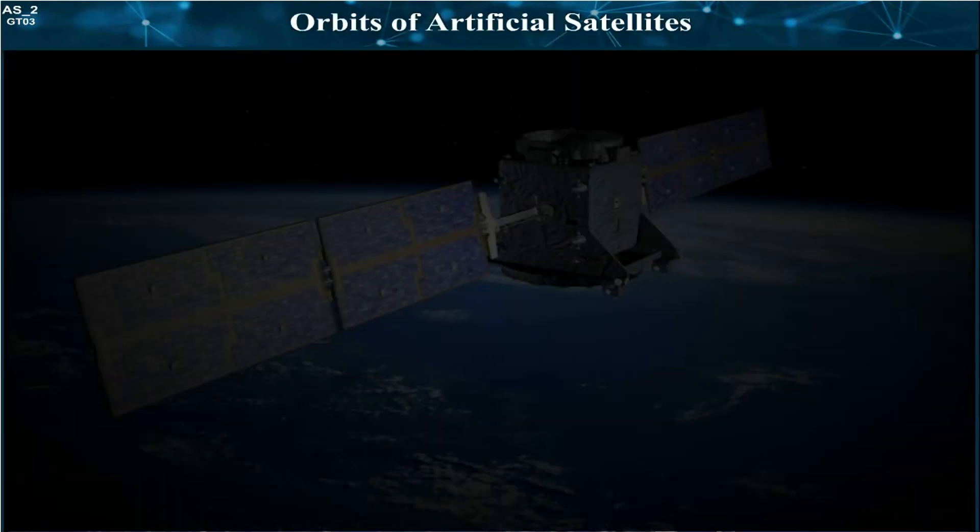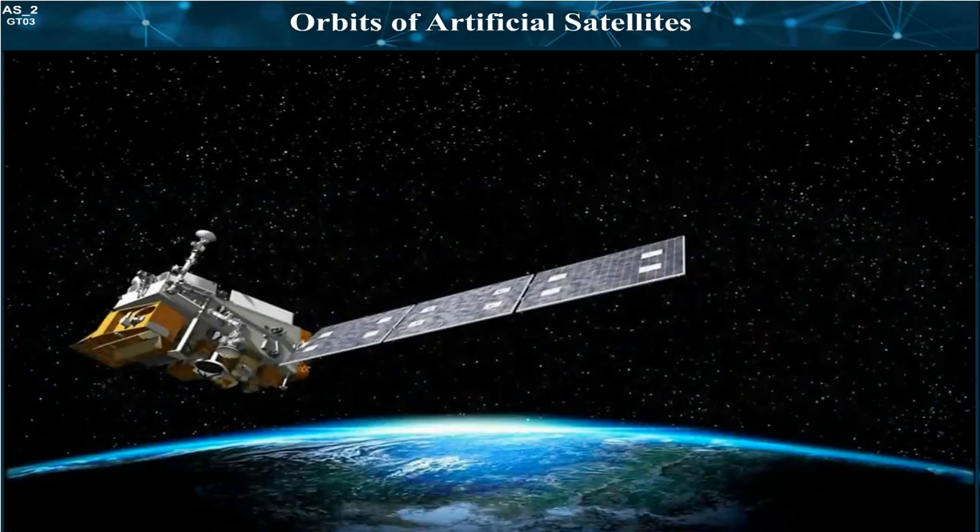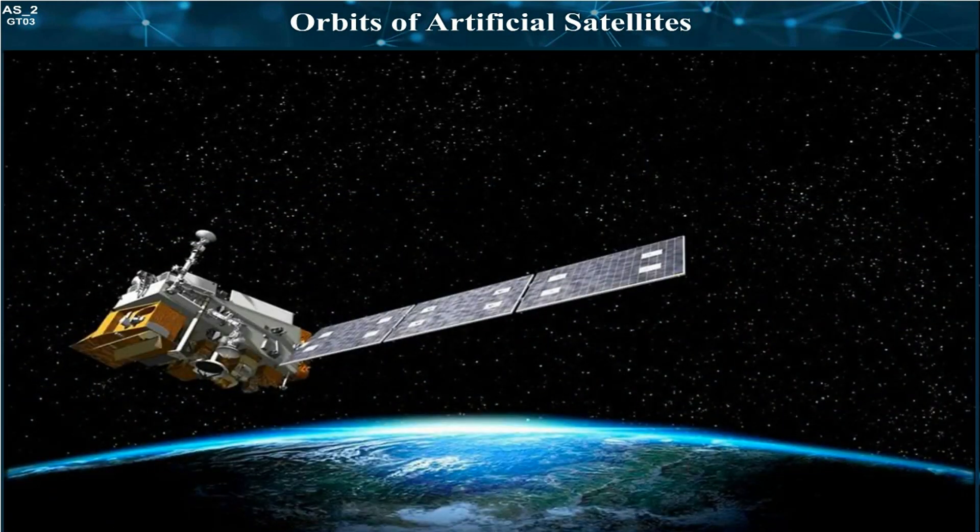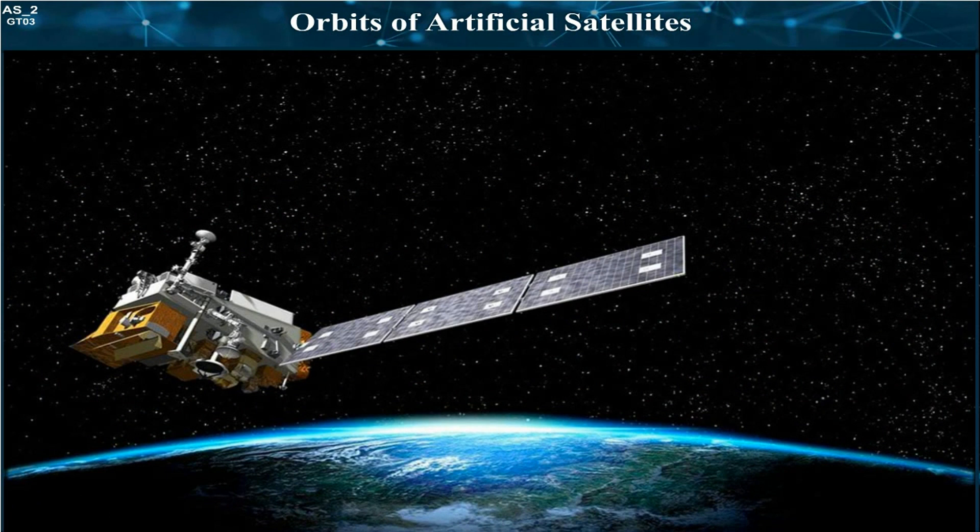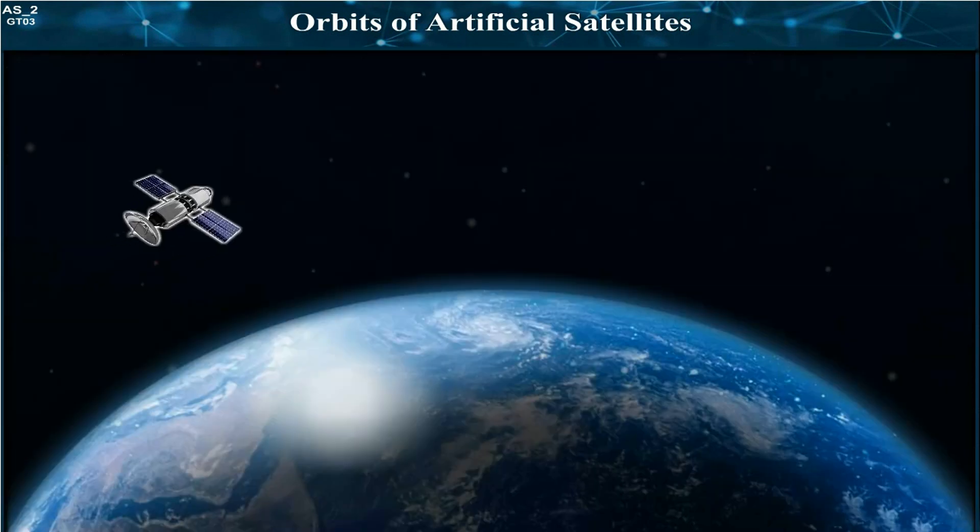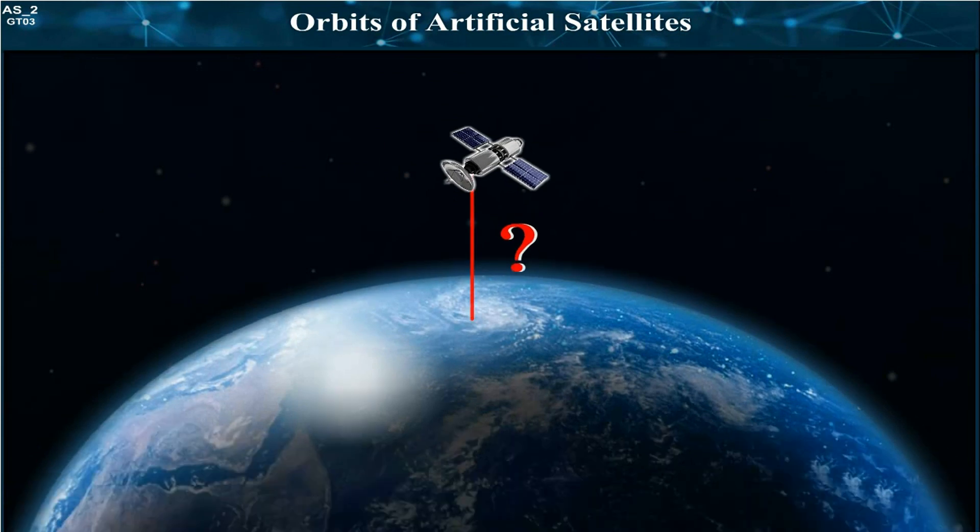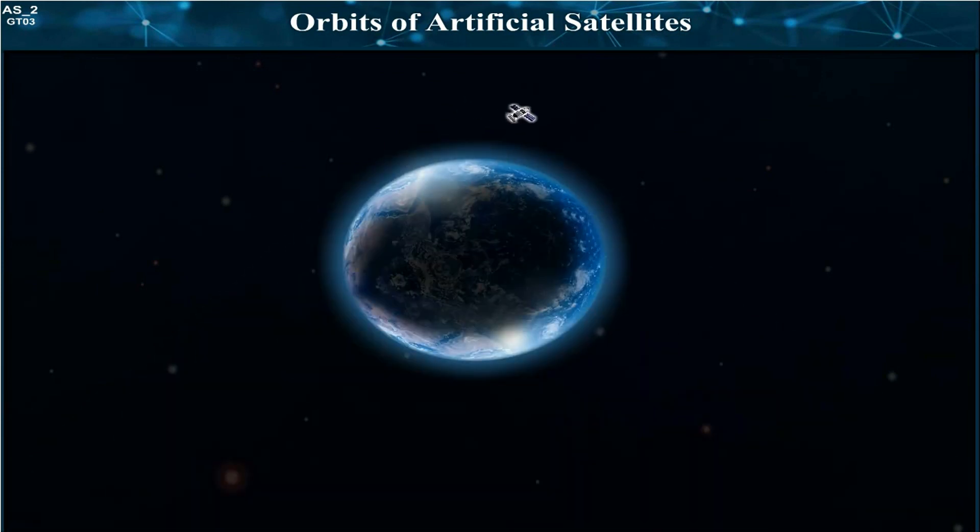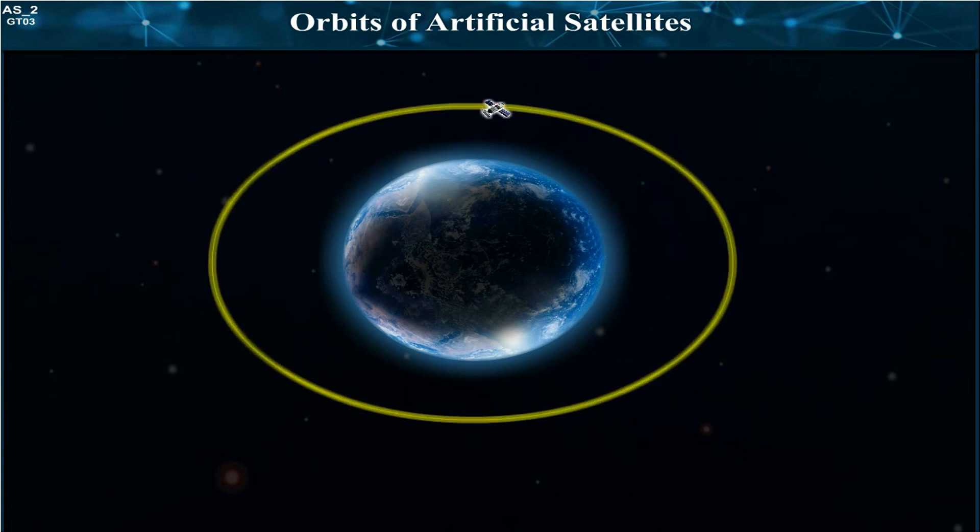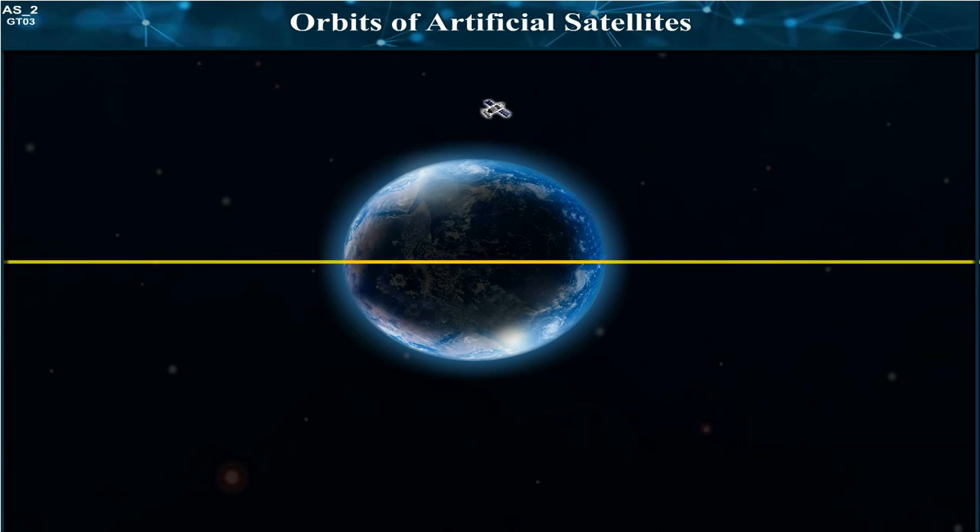Orbits of artificial satellites. All artificial satellites do not revolve in similar orbits around the Earth. The functions of the satellite decide the height of the satellite's orbit from the Earth's surface, the nature of the orbit, whether it will be circular or elliptical, and whether the orbit shall be parallel to equator or making some angle with it.